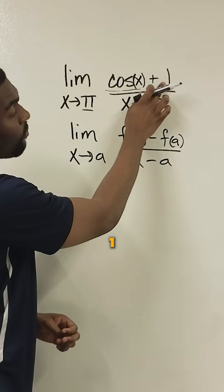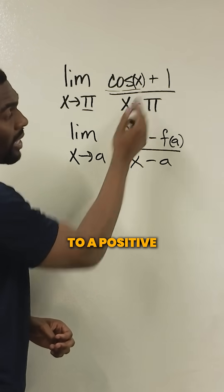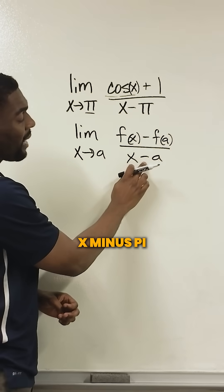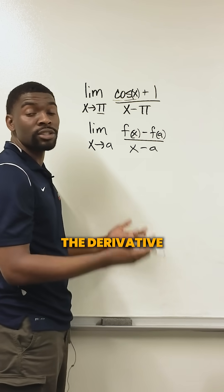Cosine of pi is negative one. So we flip this to a positive one. We can simply solve by taking the derivative.